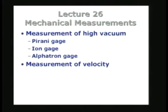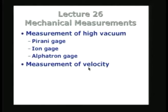Today I will continue with the measurement of vacuum — specifically higher vacuum than we did last time. The three gauges I am going to talk about are the Pirani gauge, the ion gauge, and the Alphatron gauge. Then I will change the topic to the measurement of velocity, which is also a very important activity in most laboratory practice. The reason I take velocity measurement soon after pressure is that in many cases, the velocity information is converted to pressure information.